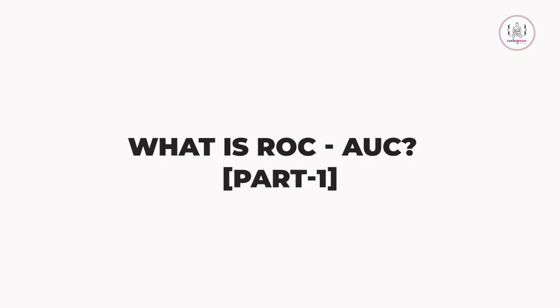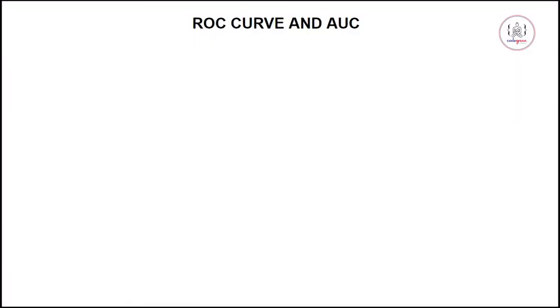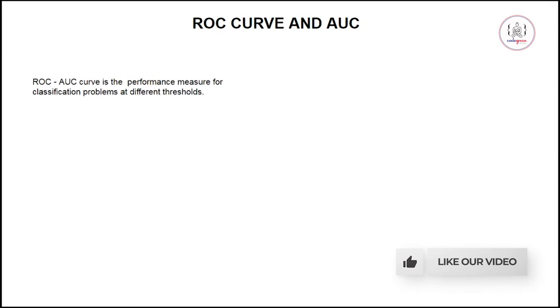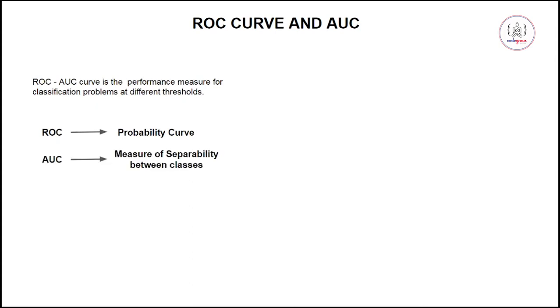Hello everyone, and welcome. In this video we are going to see what is the ROC and AUC curve in machine learning. This is going to be a two-part video, so make sure that you watch the second part after watching this first part. ROC AUC curve is the performance measure for classification problems at different thresholds. ROC is your probability curve and AUC is a measure of separability between classes.